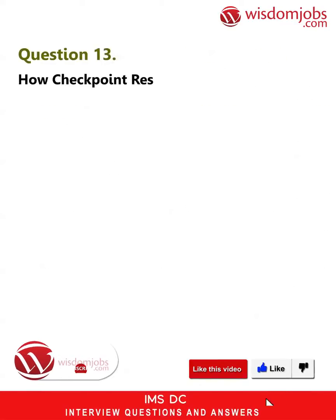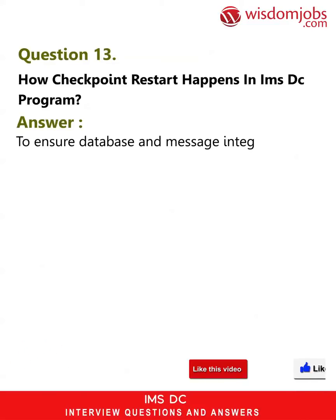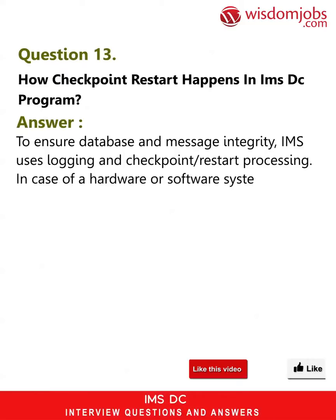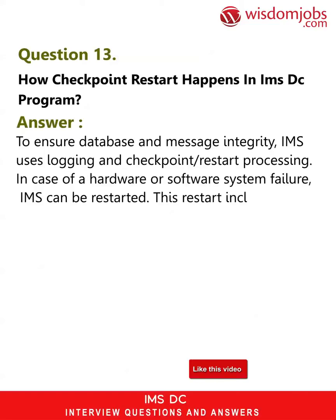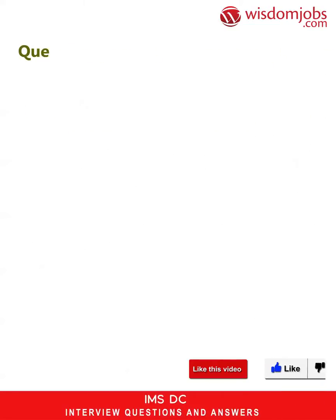Any uncommitted database changes are dynamically backed out and any uncommitted output messages are cancelled. Question 13: How does checkpoint restart happen in an IMS DC program? Answer: To ensure database and message integrity, IMS uses logging and checkpoint/restart processing. In case of a hardware or software system failure, IMS can be restarted. This restart includes reading the IMS log to reposition the databases and messages to recover from the point of failure.